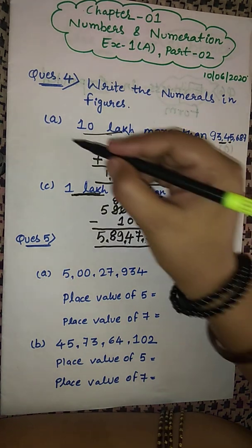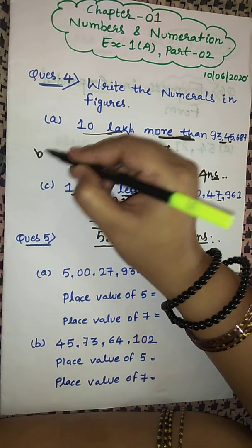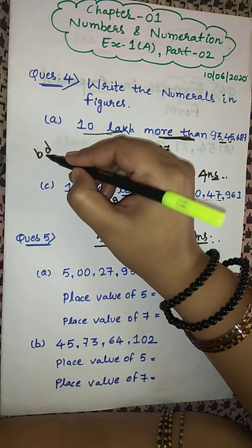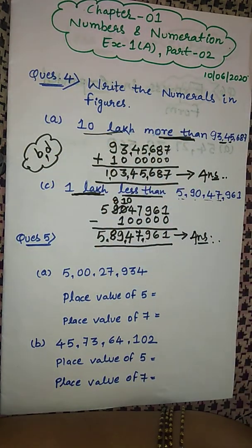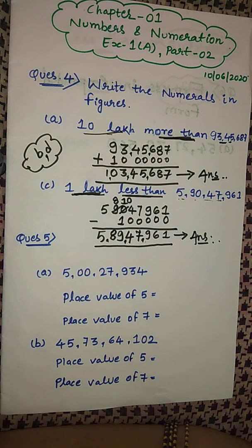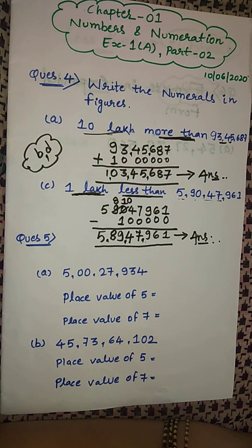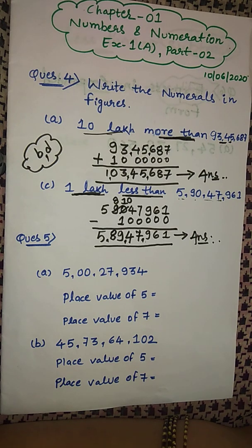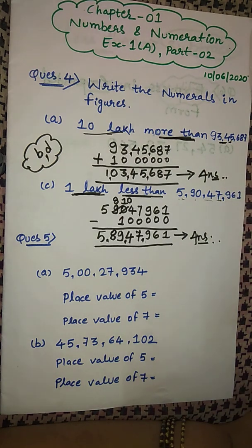I have explained questions (a) and (c). Questions (b) and (d) are left — please try to solve them. In question (b) we have 'more than', so you need to add. In question (d) we have 'less than', so you need to subtract.